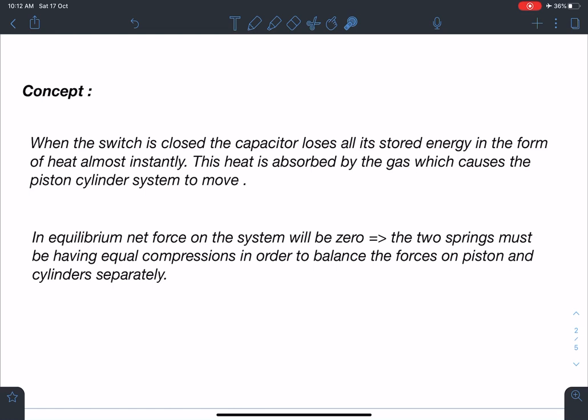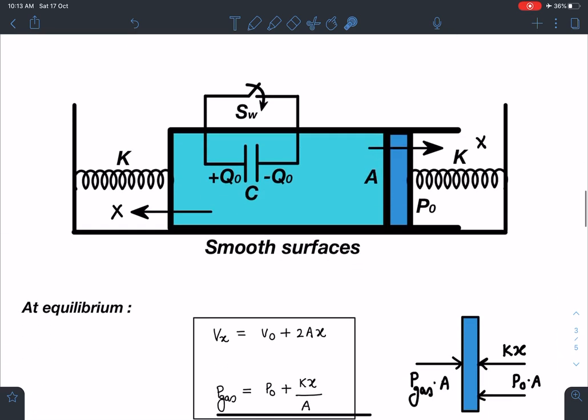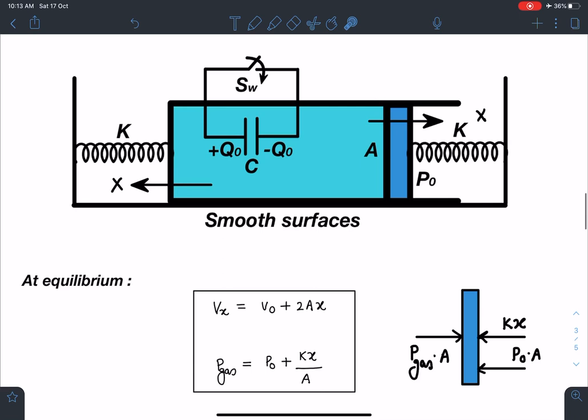Second point is in equilibrium net force on the system will be zero. That means the two springs must be having equal compressions in order to balance the forces on piston and cylinder separately. So when we are going to draw the free body diagram of piston separately and cylinder separately, you can see the both the springs must have equal compressions.